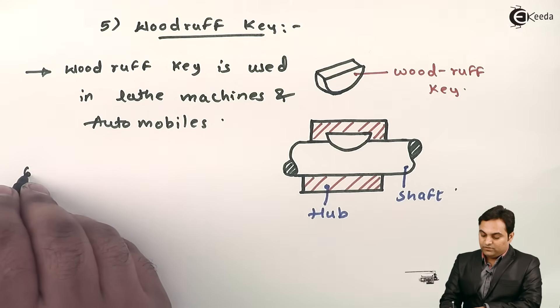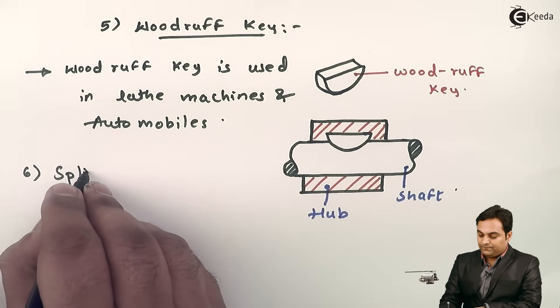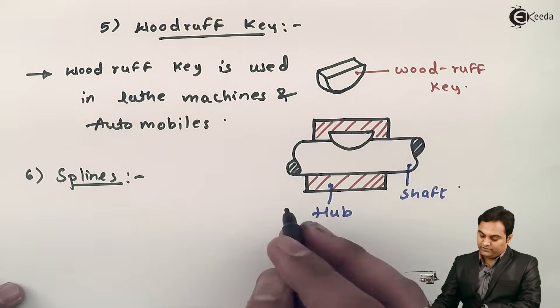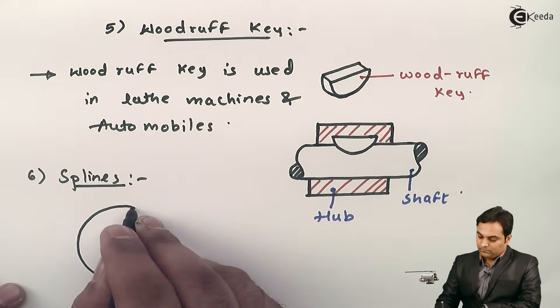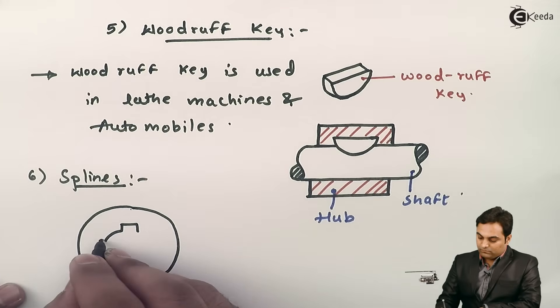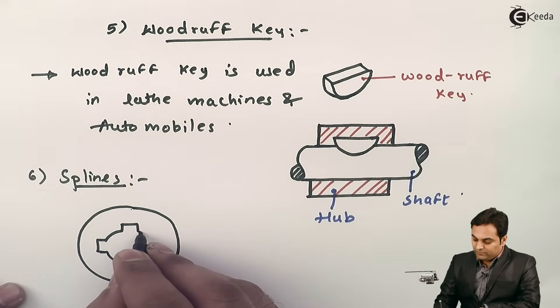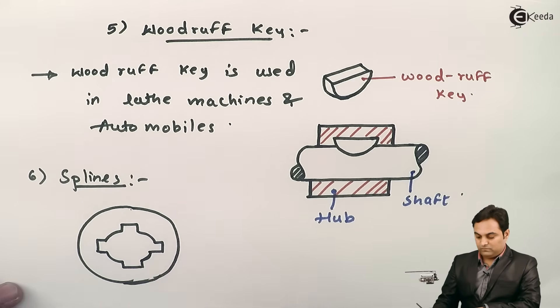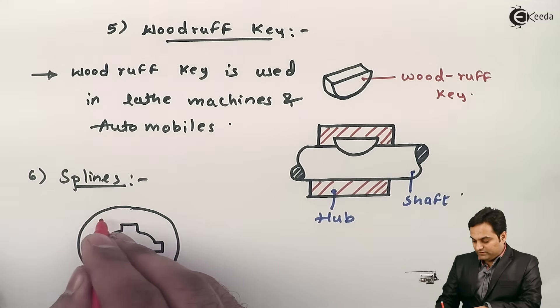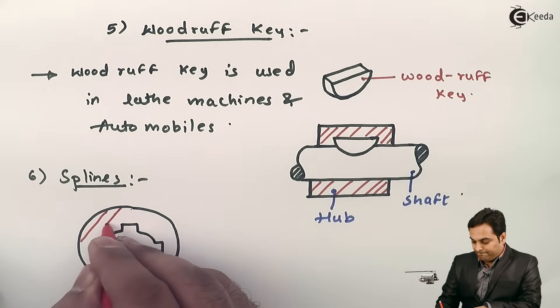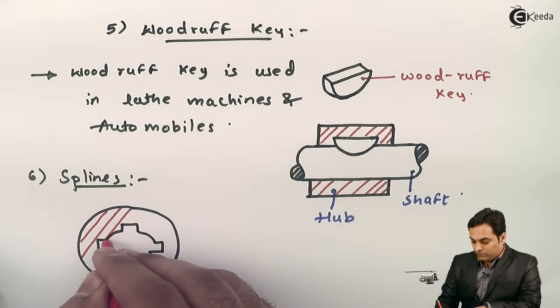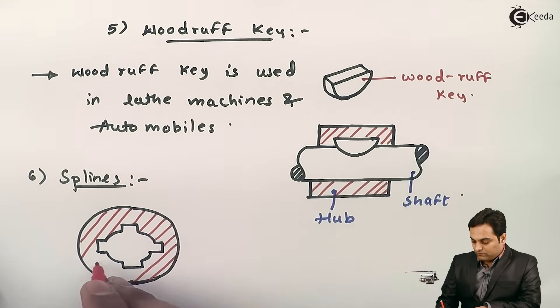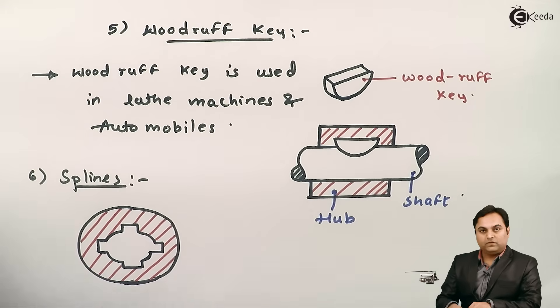Next, at last we have splines. Splines are—if I can explain that with a diagram—this is the diagram of a spline. Now here what I have drawn, it is the hub portion which I am drawing in section here. This is the hub, and here this is a shaft.